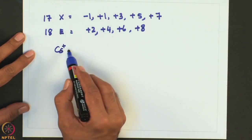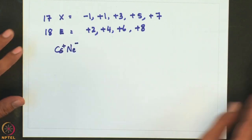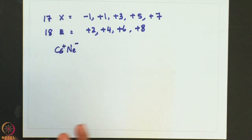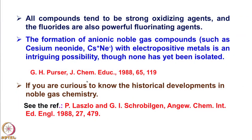All compounds tend to be strong oxidizing agents and the fluorides are also very powerful fluorinating agents. The formation of anionic noble gas compounds such as cesium neonide with an electropositive metal is an intriguing possibility, though none has yet been isolated — this was reported in the Journal of Chemical Education in 1988. If you are curious to know the historical developments in noble gas chemistry, you can look into articles in the Journal of Chemical Education and Angewandte Chemie International Edition.